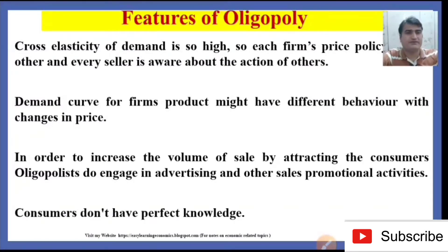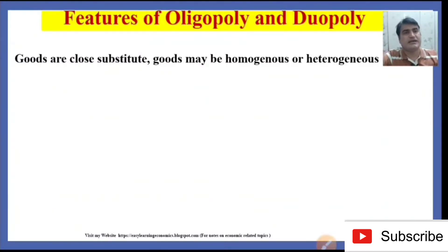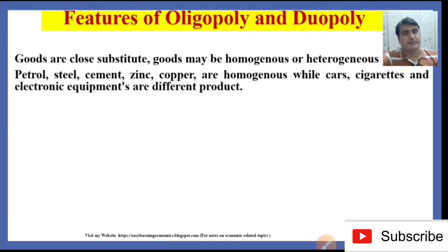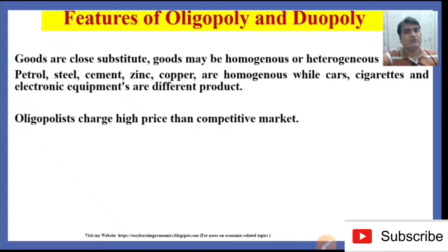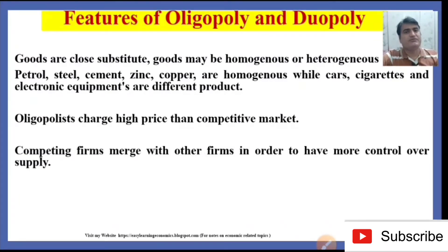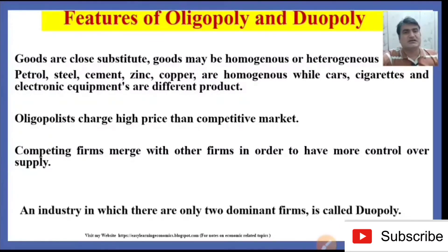Consumers don't have perfect knowledge. Goods are close substitutes and may be homogenous or heterogeneous products. For example, petrol, steel, cement, zinc, and copper are homogenous goods, while cars, cigarettes, and electronic equipment are differentiated products. Oligopolies charge higher prices than competitive markets. Competing firms may also merge with other firms in order to have more control over supply.